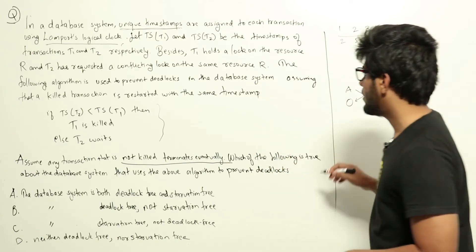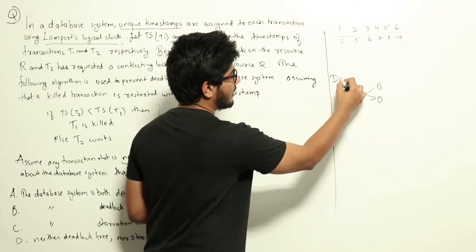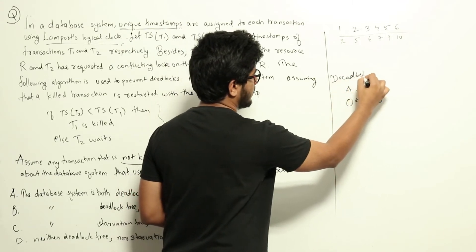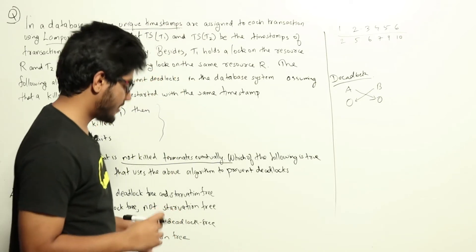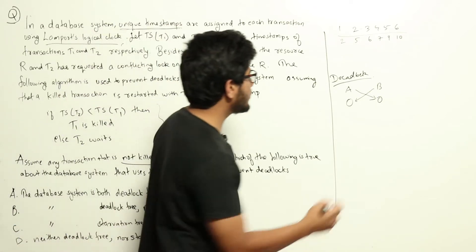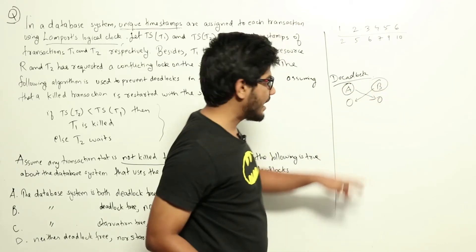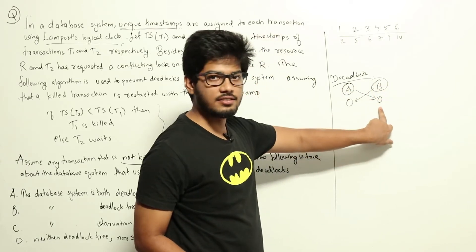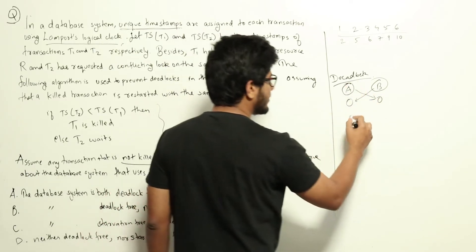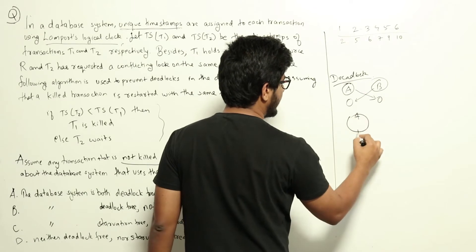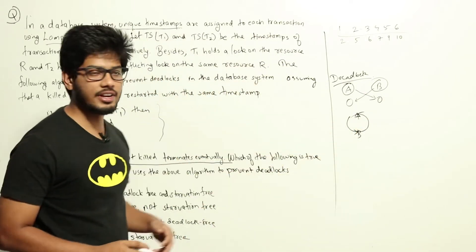Now let's examine the condition for deadlock. When does deadlock happen? Consider two transactions A and B: A has a resource, B has a resource, B wants A's resource, and A wants B's resource. This is a circular wait — A and B are each waiting for a resource held by the other. This is the case for deadlock.